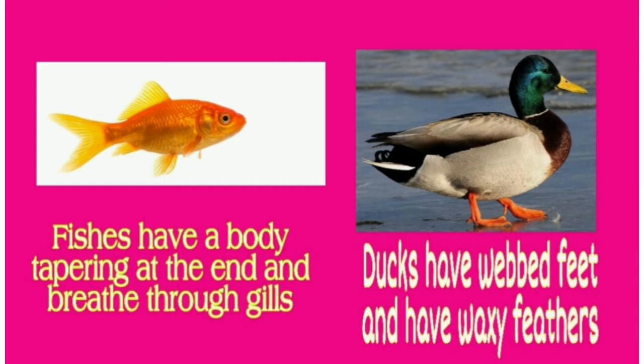The fish has a tapering body — the body is fat at the center but tapers at both ends. Fishes also have scales throughout their body and they breathe through gills because they live in water. Ducks have webbed toes — if you see, the toes are webbed — and slippery, smooth skin. They can live on both water and land.